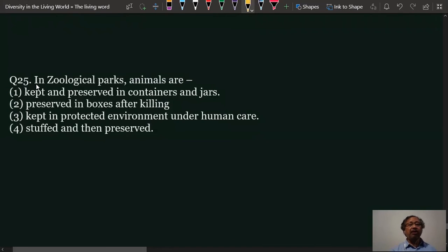Question number 25: In zoological parks, animals are kept in protected environment under human care. The other three options - kept and preserved in containers and jars, preserved in boxes after killing, stuffed and then preserved - these are for the museum.